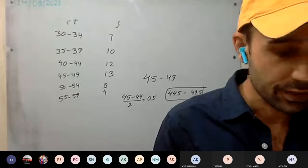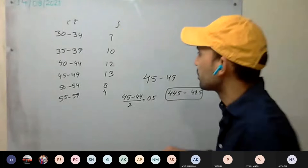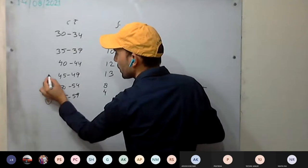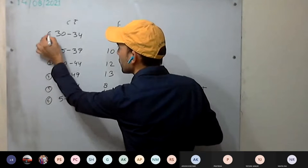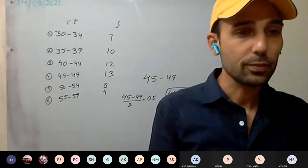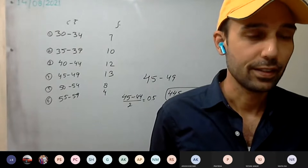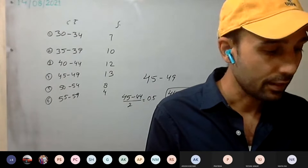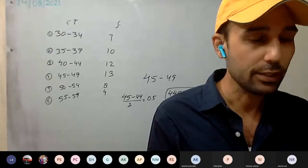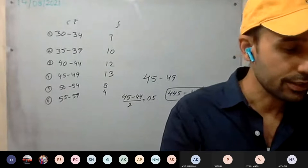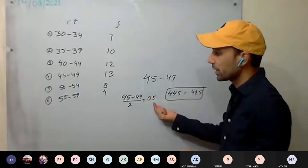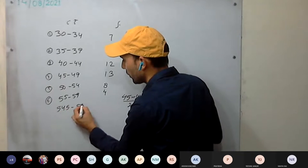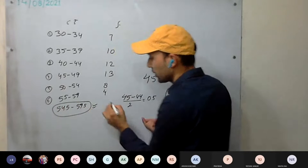The second question asks for the class boundaries of the sixth class. The actual or true class limits are also called class boundaries — we studied this on page 226. The sixth class is 55 to 59. Using the same adjustment factor of 0.5, the class boundaries are 54.5 to 59.5.